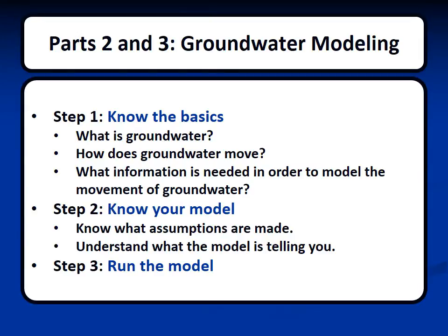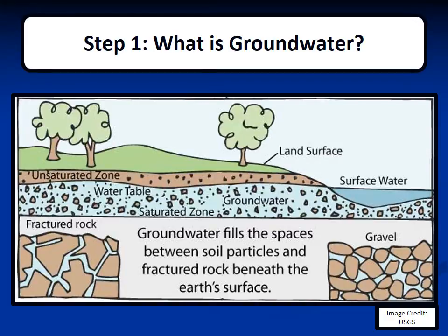In Parts 2 and 3 of the event, students will be expected to run a groundwater computer model in order to answer questions. In order to prepare for the event, students should follow three steps. Step 1: students should know the basics — what is groundwater, how does groundwater move, and what information is needed to model its movement? Once they know the basics, they can move on to Step 2: know your model. All models are useful, but no model is correct, meaning all models make assumptions. Students need to know what assumptions the hydrogeology model makes, what inputs generate what outputs. Once the student knows all of this, they can move on to Step 3: running the model. Today we'll run through all three steps, beginning with the basics.